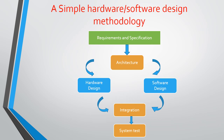The next one is simple hardware or software design methodology. First you get requirements and specification, then architecture. From that architecture, you design hardware and software separately. Then you combine hardware and software — that is called integration — and finally system test, which is testing for errors.